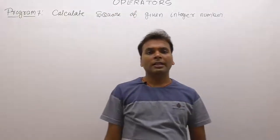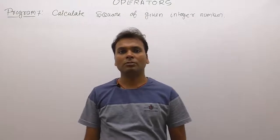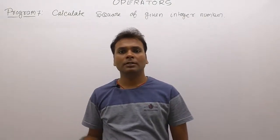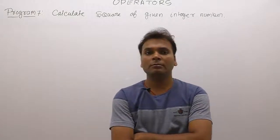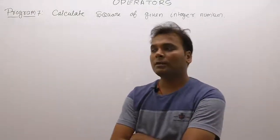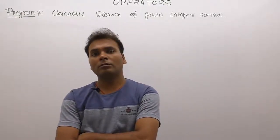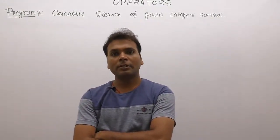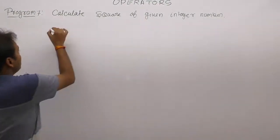Next one, again calculating a square of given number using C programs. We are solving some small problems, in that case we are using only arithmetic operators. In this case we are using multiplication first of all to perform or to display a square of given number.